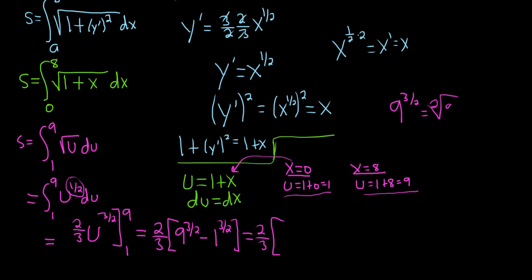So the square root of 9 is 3, 3 cubed is 27. So this is going to be 27 minus 1, because 1 to the 3 halves is 1. So this is 2 thirds times 26. So this is just 52 over 3. And 52 over 3 in decimal form is 17.3333.